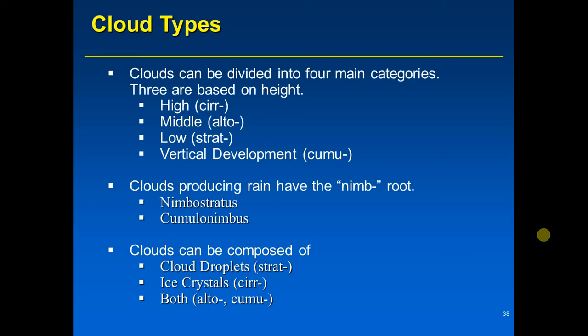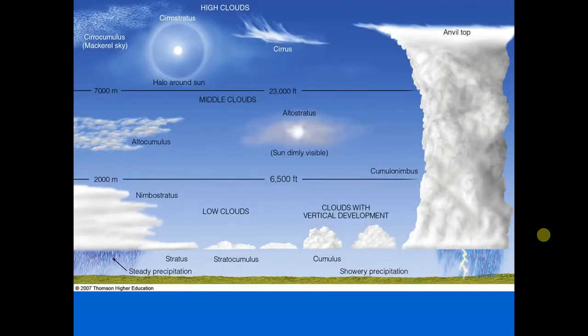Remember that in the troposphere, on average temperature decreases 3.6°F for every thousand feet one ascends. Now let's look at the clouds and talk about specific names. This figure from the book shows all major cloud types — the four categories: high clouds, middle clouds, low clouds, and those of vertical development.